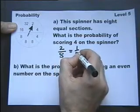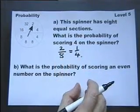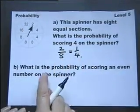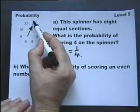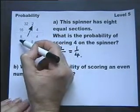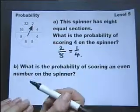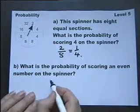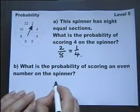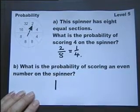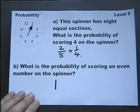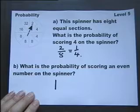What is the probability of scoring an even number? Well, they're all even numbers. So you could put 8 over 8, but there's not much point in that, because it's a dead cert, therefore the answer is 1. The probability of scoring an even number is a dead cert, and a dead cert we say is a probability of 1.